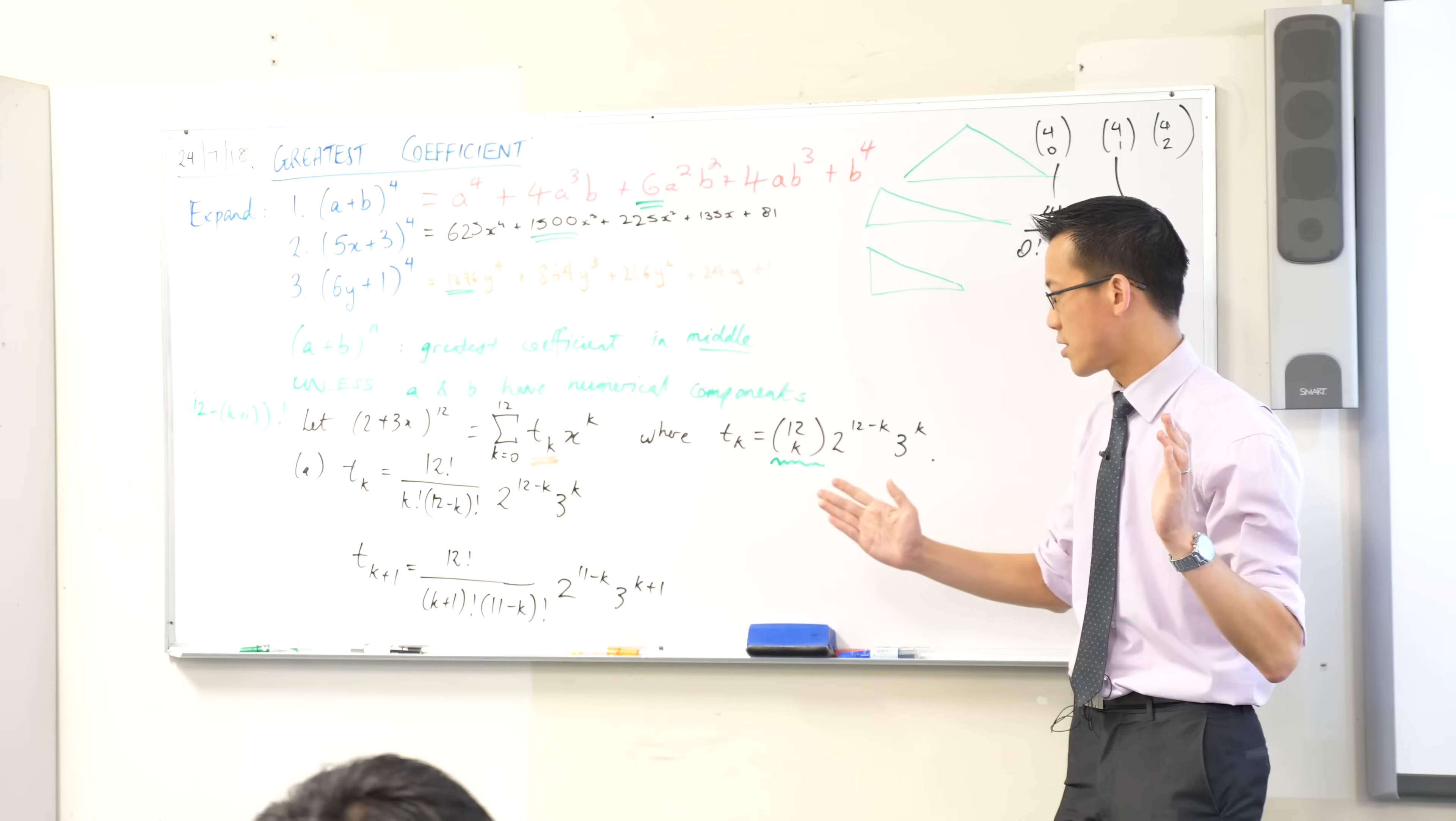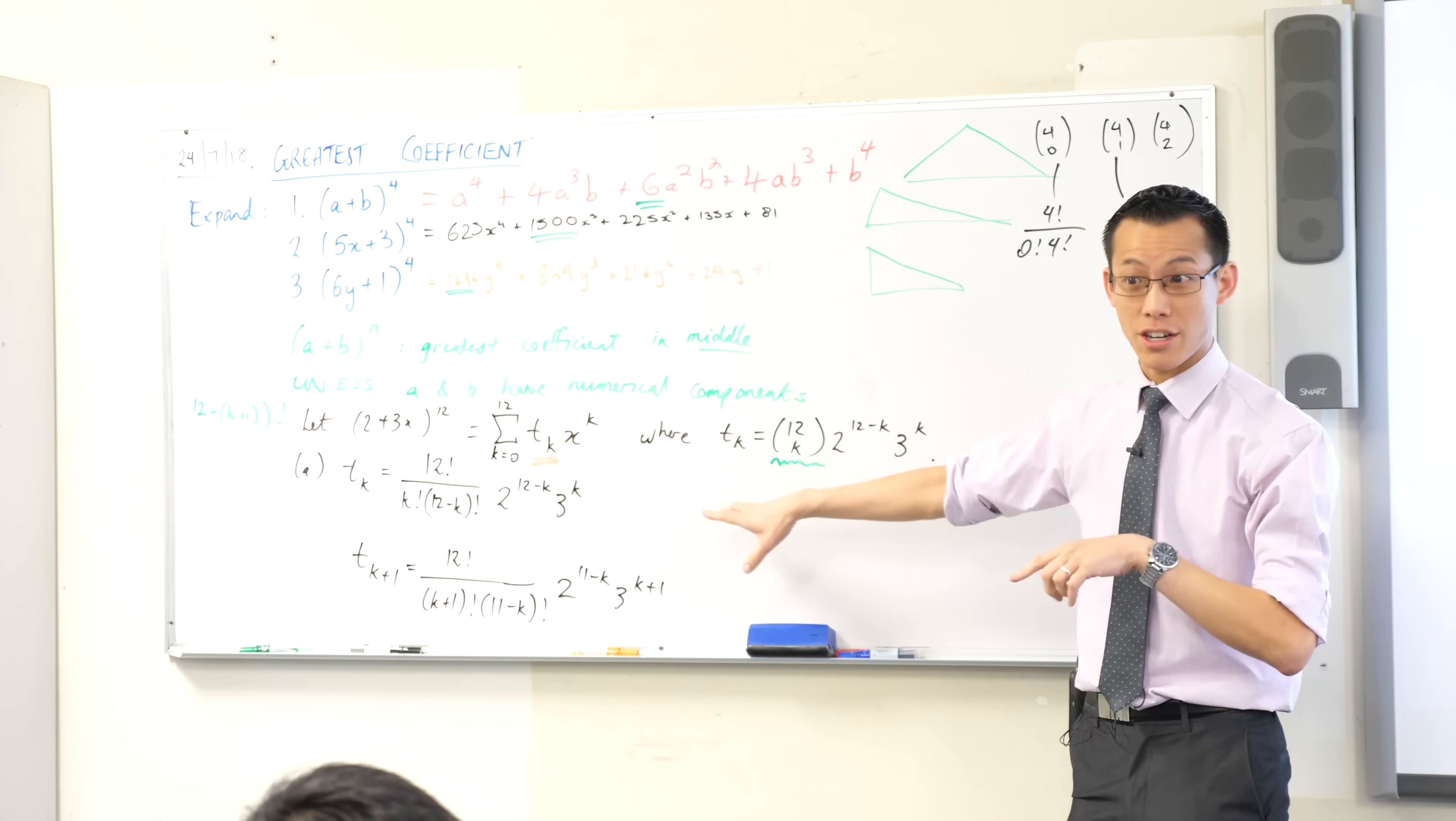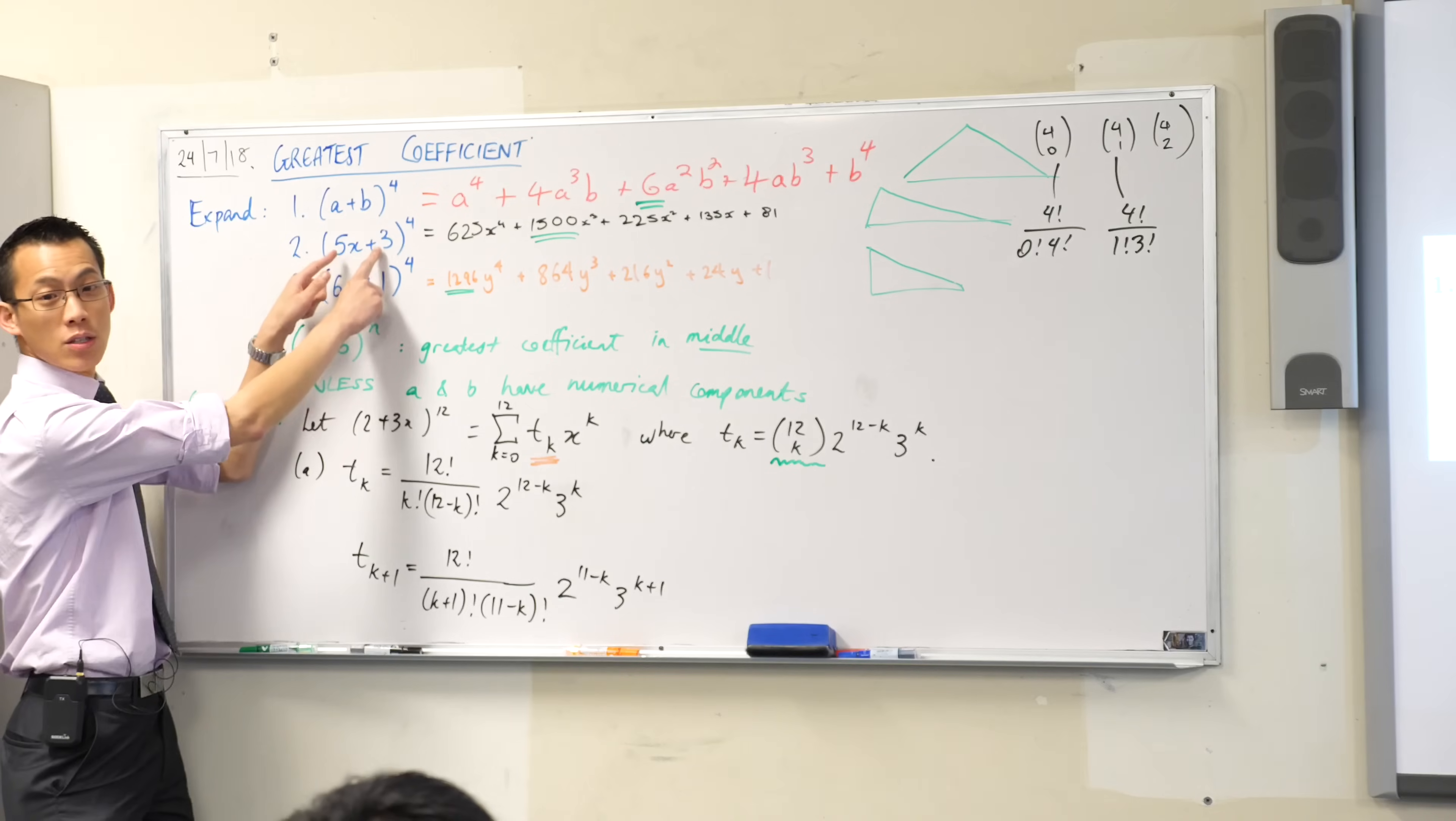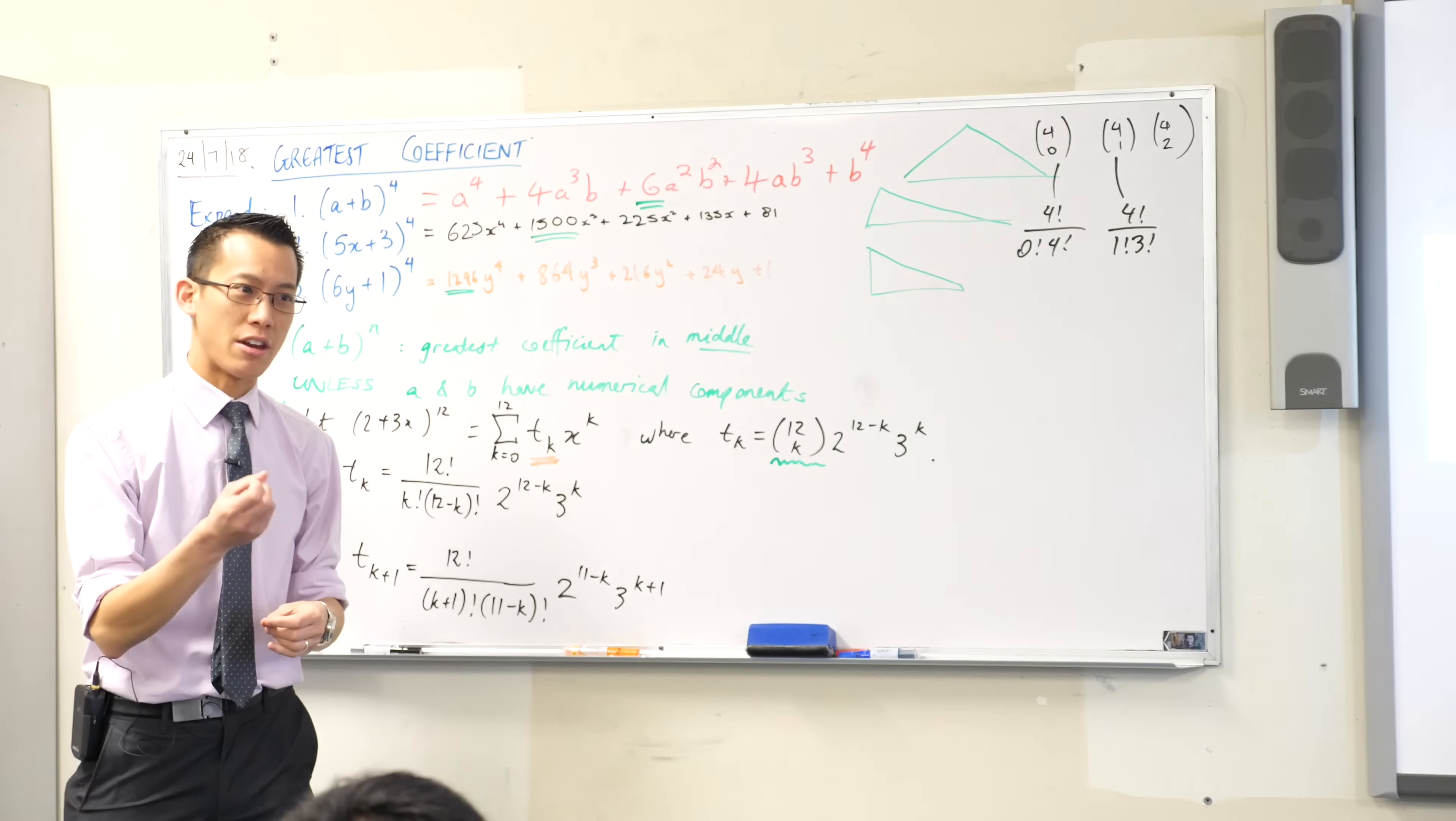So of the 13 coefficients, the seventh one, is that the middle one? I think in this case it actually is. And why is that? Well, this 2 and this 3, they're not very different. Did you notice up here I had to make these numbers quite different in order to change where the greatest coefficient will be? So this is kind of nice.